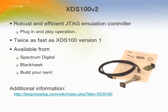The XDS100V2 is a very inexpensive JTAG emulator solution. For less than $80, you get the capabilities to interact and control the AM1X. This emulator is USB-powered and is available from Spectrum Digital and Blackhawk. TI makes the design files available, so you can even build your own. If you have the board space available, one idea is to design this onto your own product as a debugging section for development purposes. The XDS100V2 only works with CCS4 or later. For additional information, you can go to the wiki page shown.